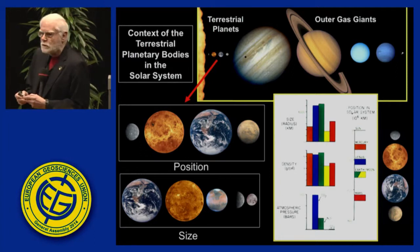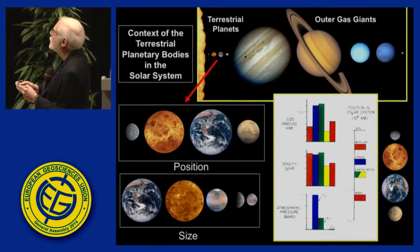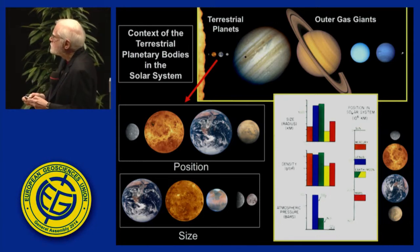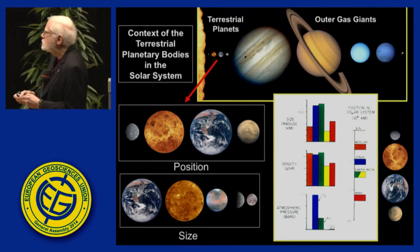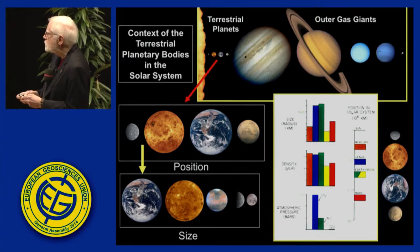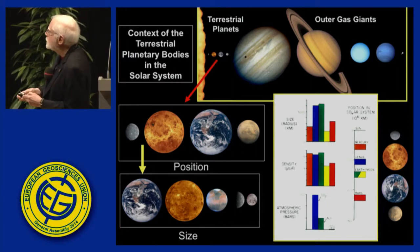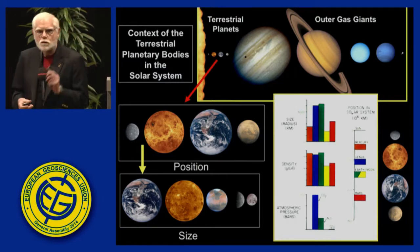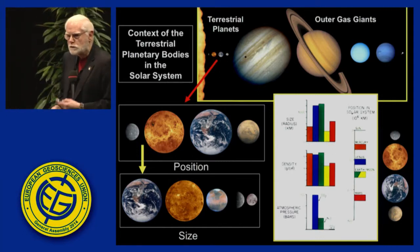I'm going to focus on the terrestrial planets — the Earth-like planets. They're the smaller terrestrial bodies, in contrast to the outer gas giants. We can look at these in terms of position in the solar system and how they change as a function of distance. The Earth and Venus are the two largest, whereas Mercury, Mars, and the Moon are one-half the diameter or less of the Earth. We'll start with the Moon and work our way up in size toward the Earth.